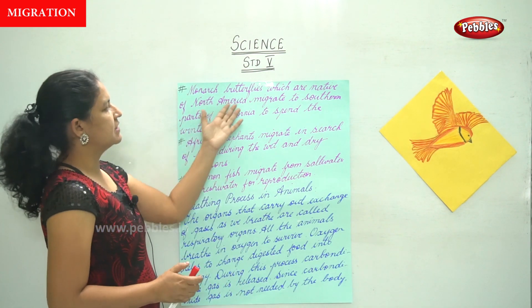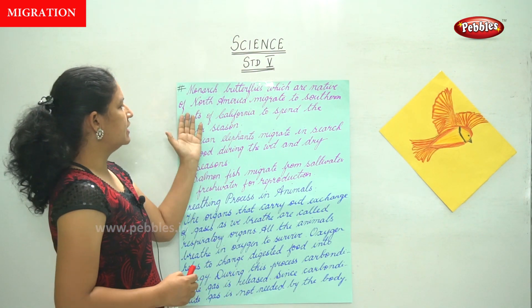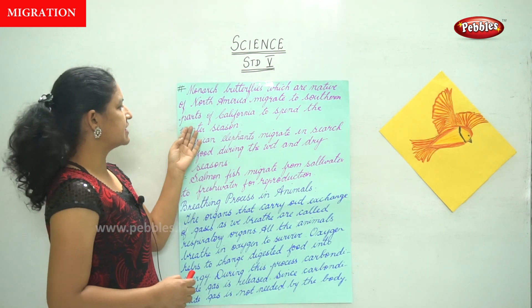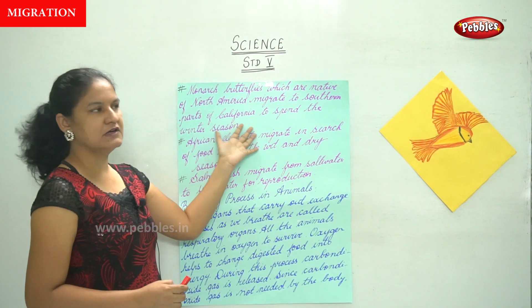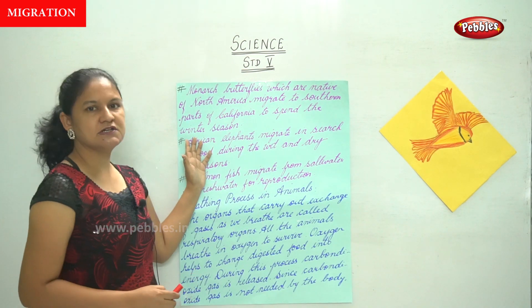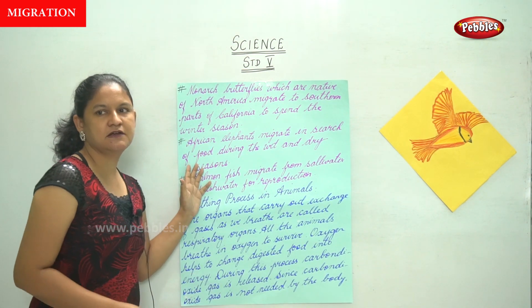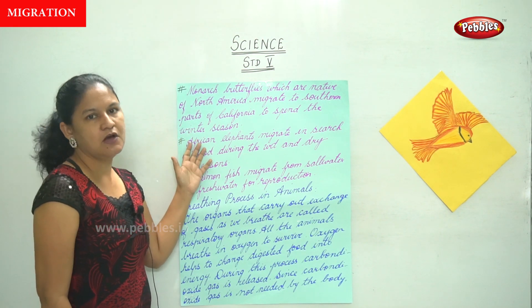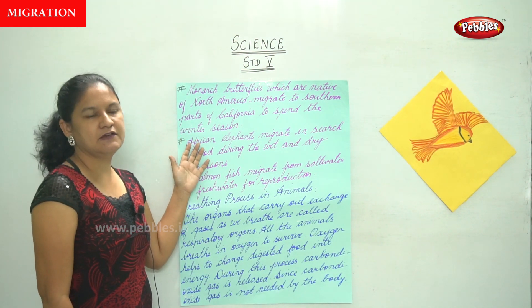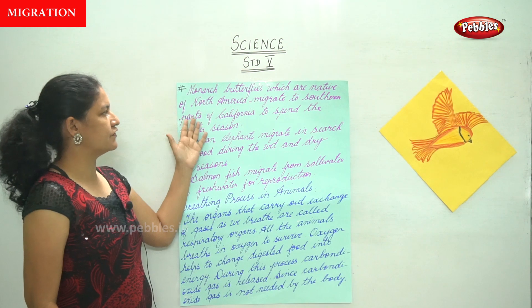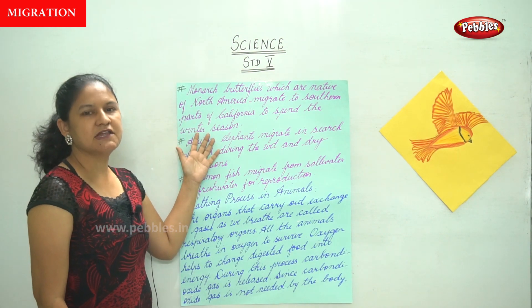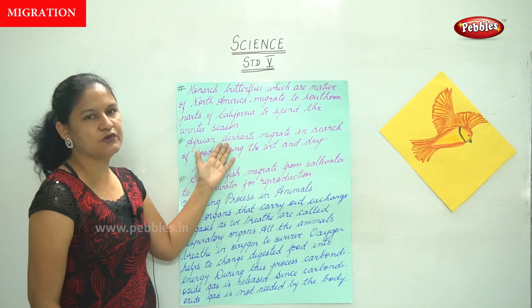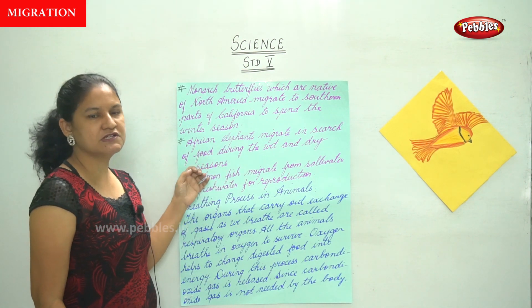The monarch butterflies, which are native to North America, migrate to the southern parts of California to spend the winter season.